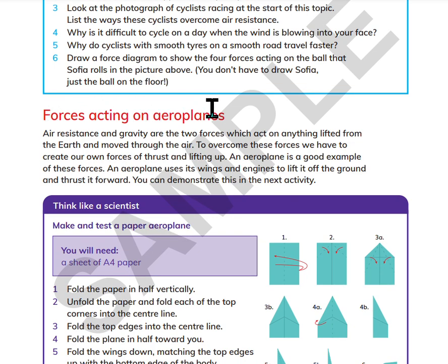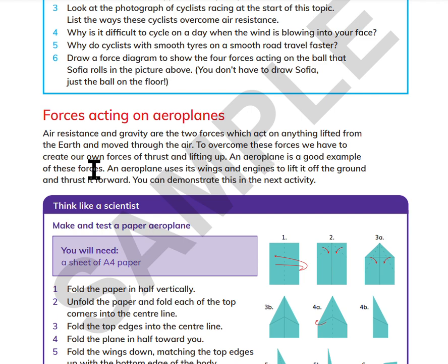Forces acting on airplanes. Air resistance and gravity are the two forces which act on anything launched around the earth and moving through the air. To overcome these forces, we have to create our own forces of thrust and lifting up. An airplane is a good example of these forces. An airplane uses its wings and engines to lift it off the ground and thrust it forward. You can demonstrate this in the next activity.